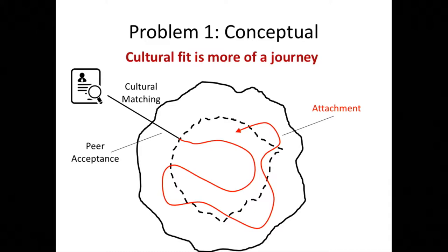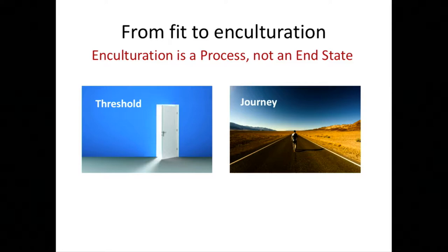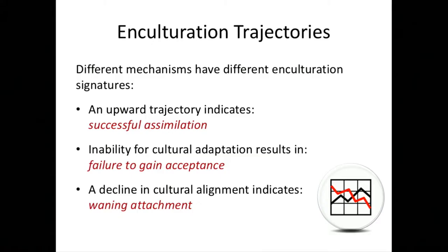These two phases relate to very different types of mechanism. Early on, the ability to fit in is going to affect mostly how peers accept you, whereas later on, your willingness and commitment and motivation to continue that journey will be related to your attachment. We'll be looking at those with respect to different outcomes — whether you were rejected and removed from the organization involuntarily, as opposed to whether you left voluntarily. The key imagery I want to convey is thinking about fit not as an end state.